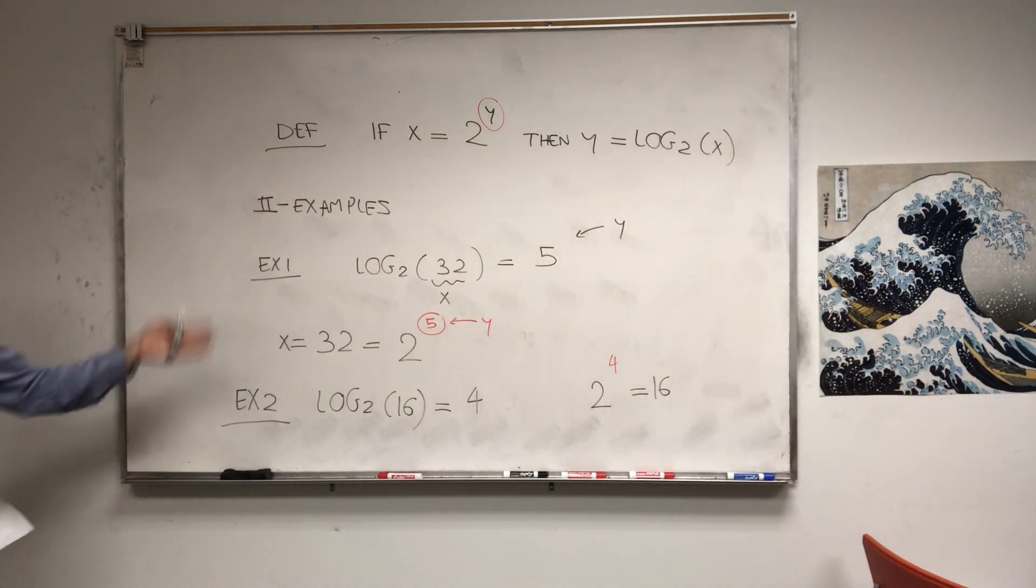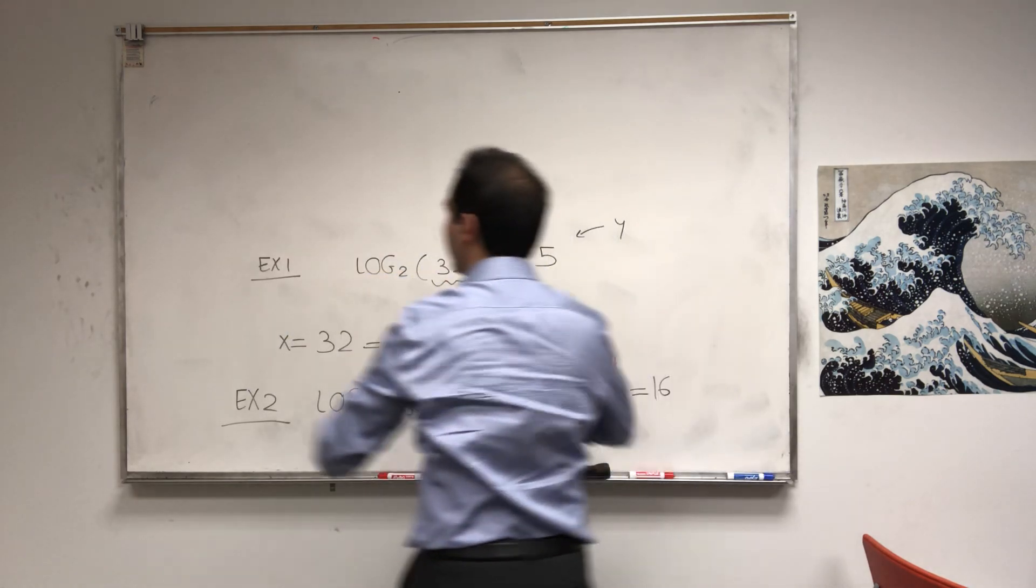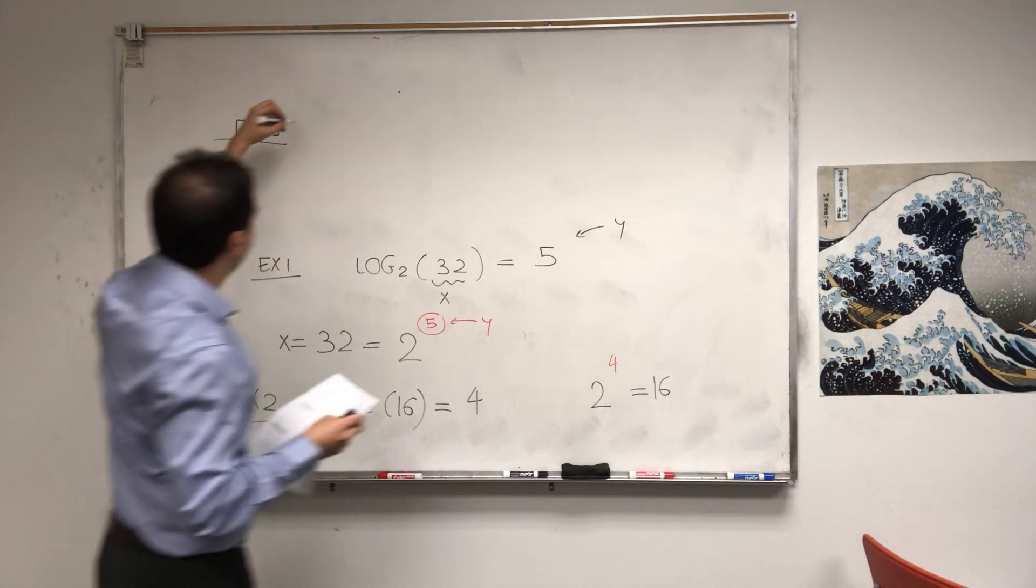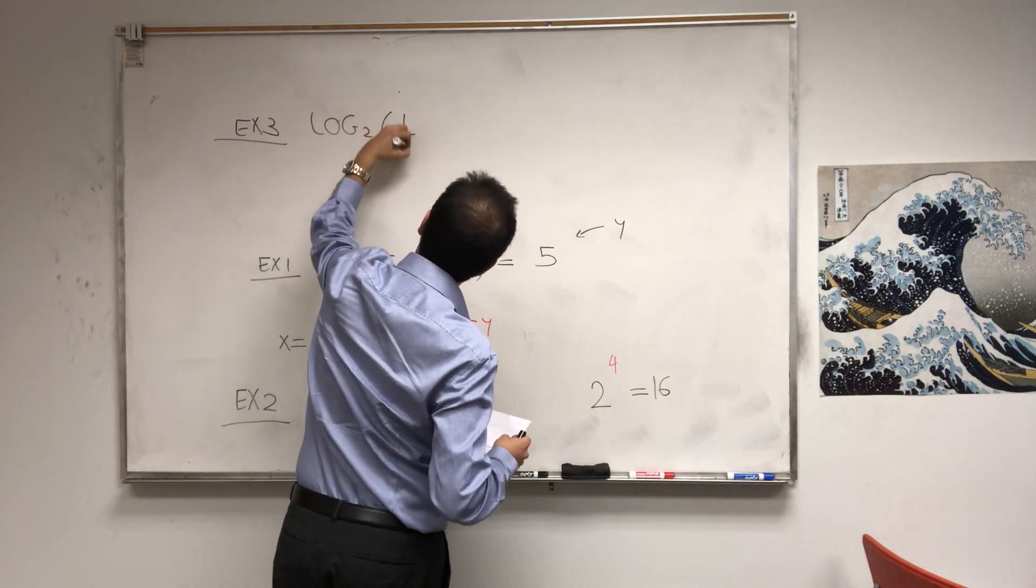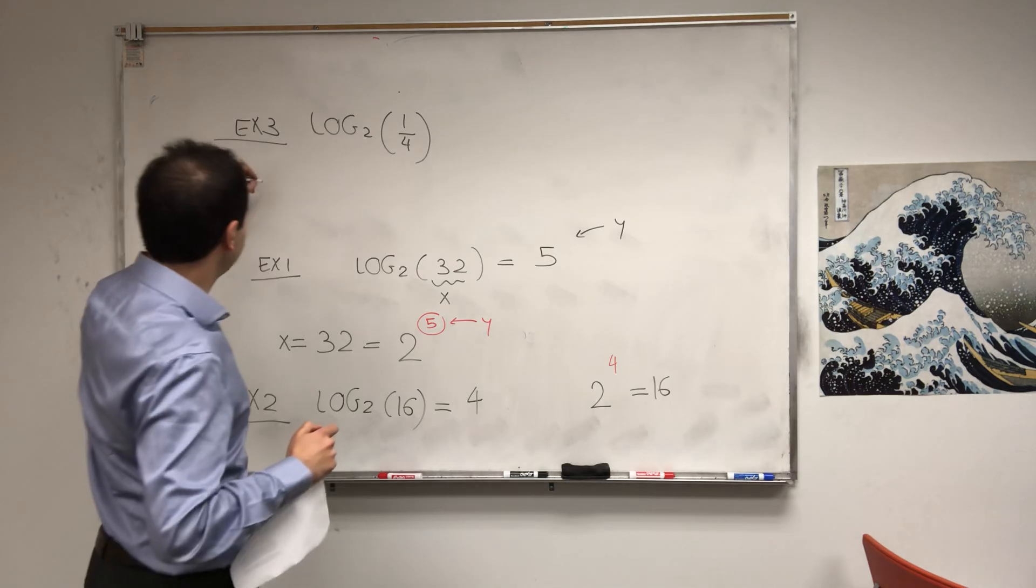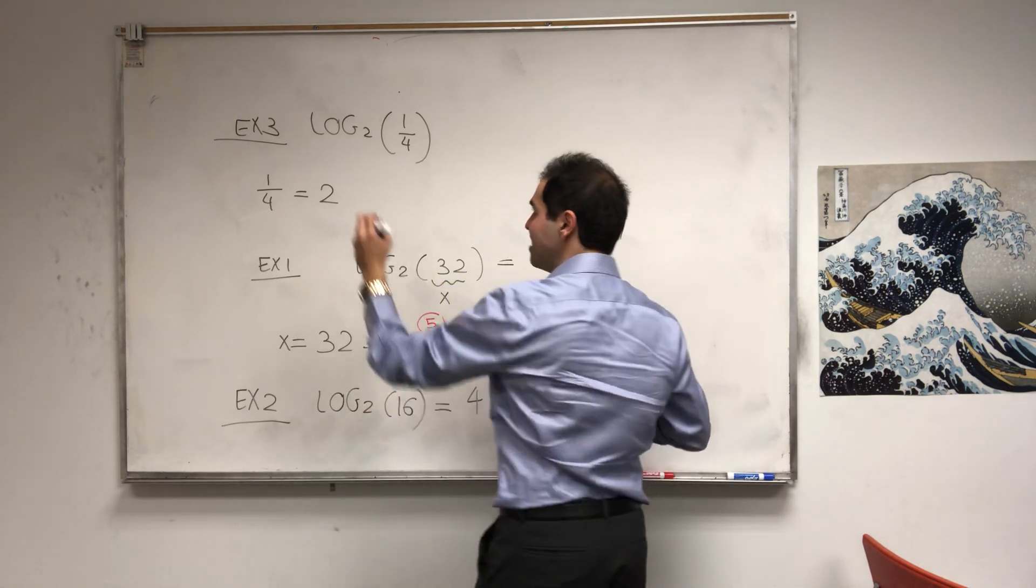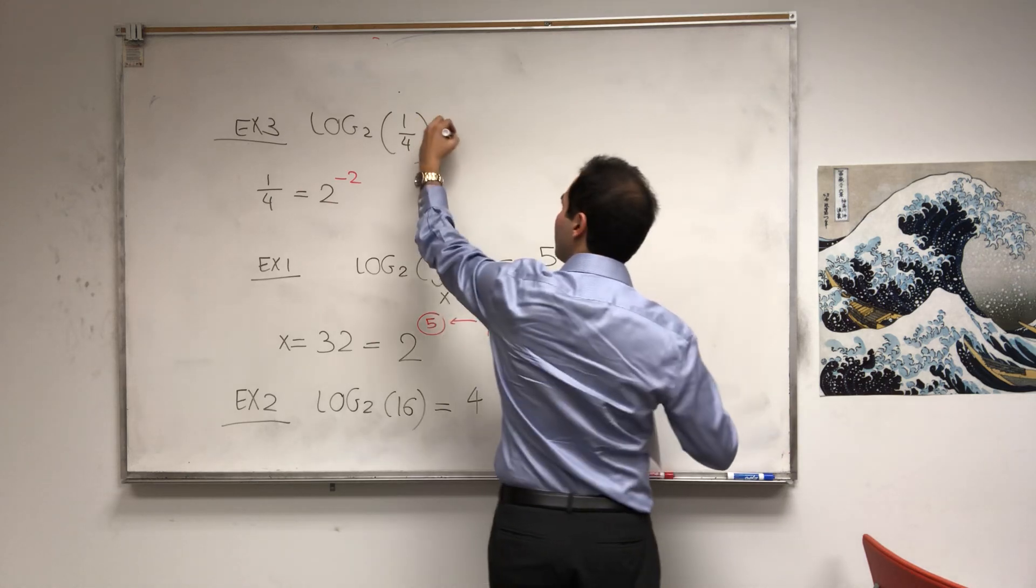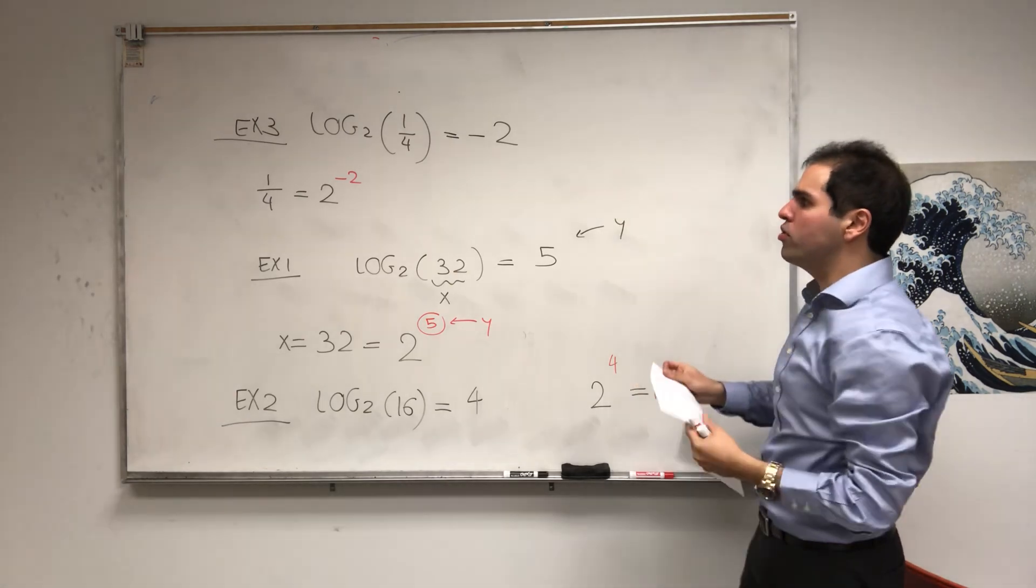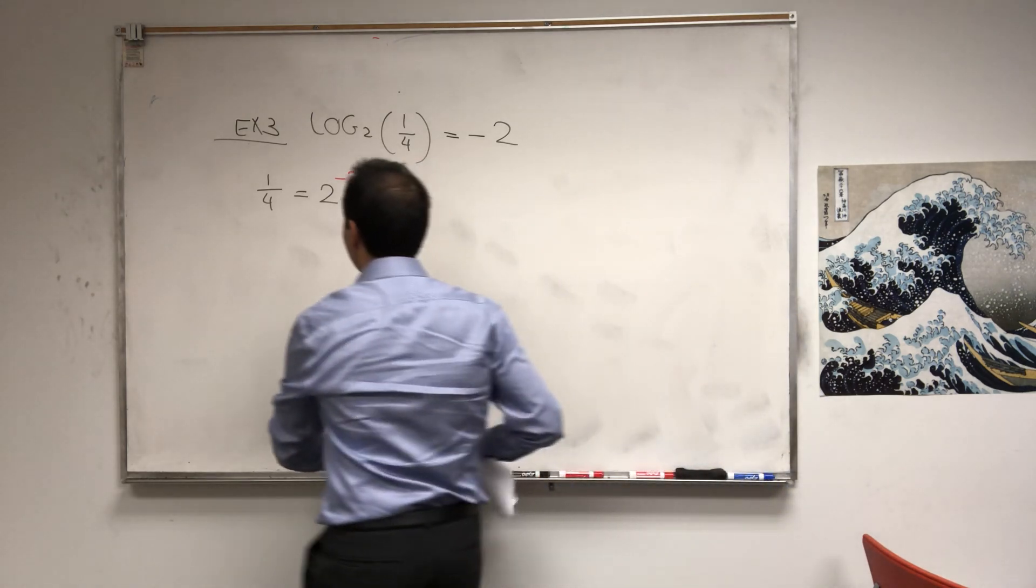And, notice you can also do this with other numbers. So, for instance, let's find the log base 2 of one-fourth. Again, it just boils down to writing one-fourth as a power of two. So, one-fourth is 2^(-2). So, log base 2 of one-fourth is minus two. Again, the exponent you have to raise two to in order to get our number one-fourth. Or, in other words, two to the what equals one-fourth.